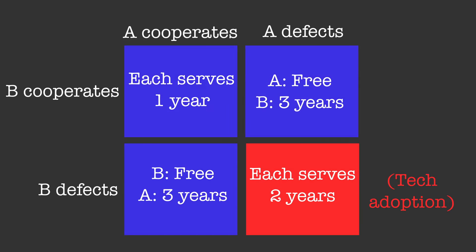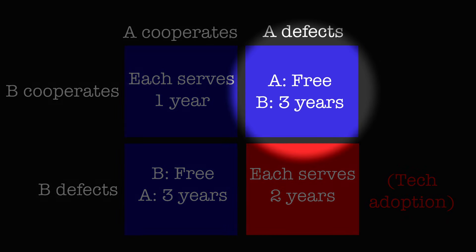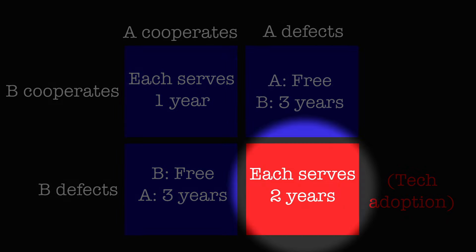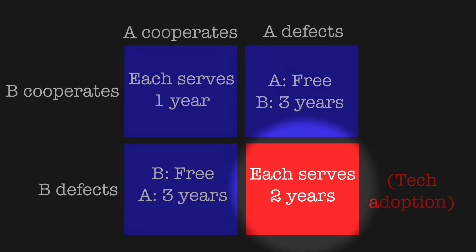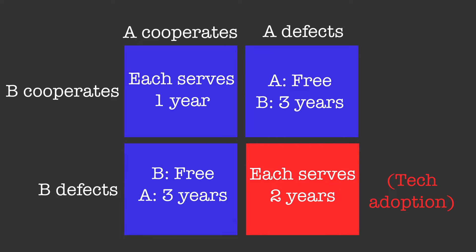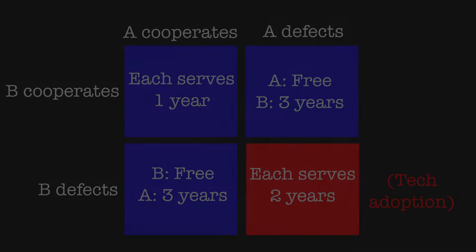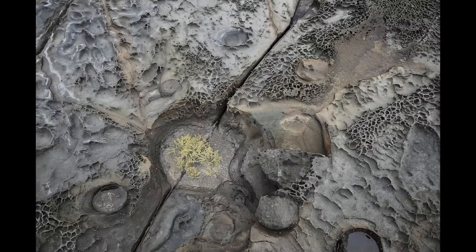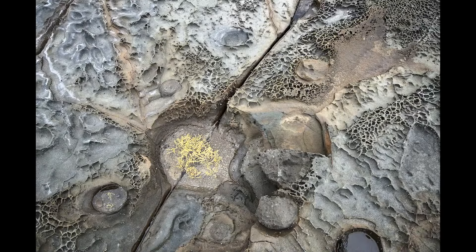That is to say, people are often forced to use technology because it gives some people short-term advantages, which then leads to everyone using it to keep up — which in turn often leads to a net detriment to the biosphere. A great example being cars, which have caused intense damage to the world.